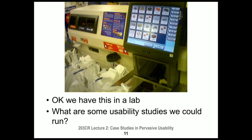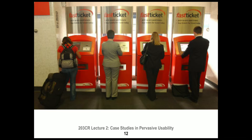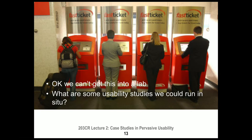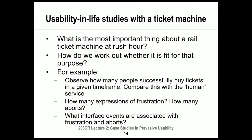Pervasive computing is about supporting activities in everyday life, so it leads naturally into observational work to check out an entire process someone is going through for real reasons. Consider a ticket machine in a railway station — people can approach it and buy a ticket. We don't really have the option to do usability testing on that kind of technology in a lab since it's built into the world.